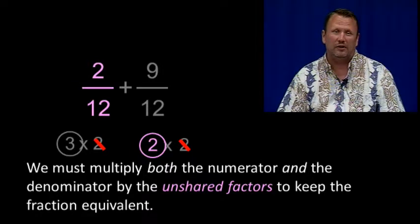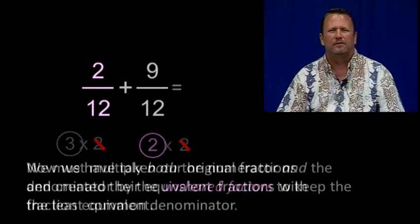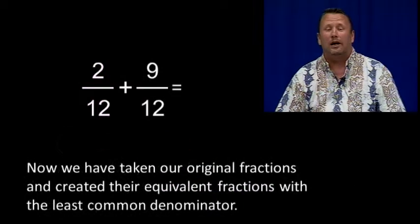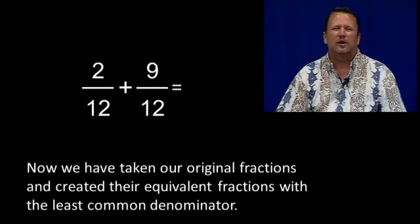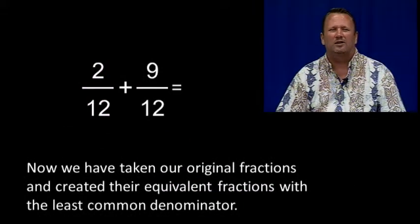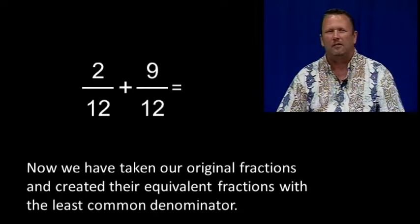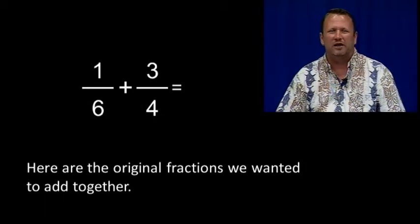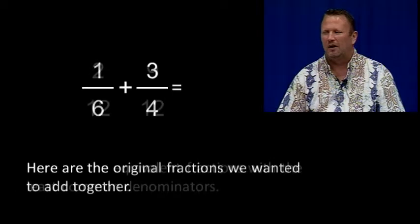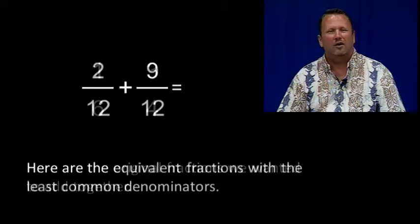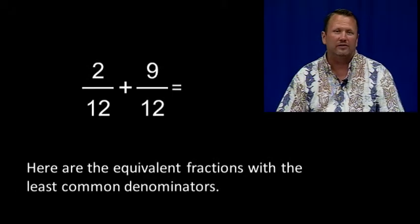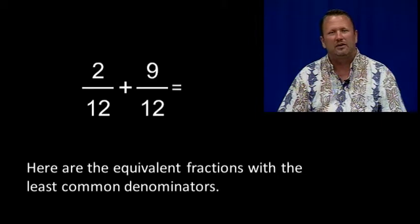Remember, 2 over 12 is equal to 1 sixth. Now we've taken our original fractions and created equivalent fractions with common denominators. Here are the original fractions we wanted to add together, and here are the equivalent fractions with the least common denominators.